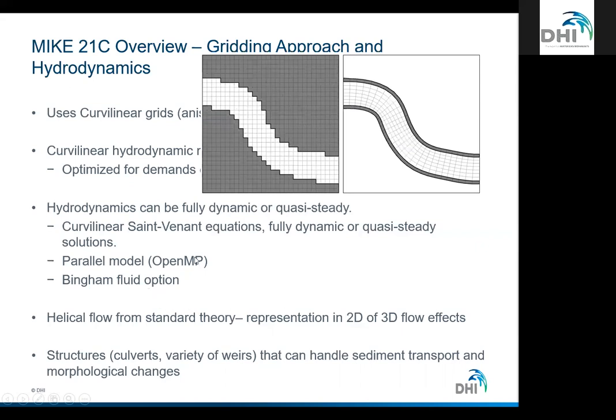In hydrodynamics, the flow can either be fully dynamic and unsteady — having a full flood hydrograph — or quasi-steady, or scaled for long-term simulations with some constant boundary conditions. We solve the full set of the Saint-Venant equations for 2D depth-integrated flow. The model is fully parallel. In MIKE 21C, as well as other 2D models DHI produces, we have a Bingham fluid option, which presents a simplified approach for doing non-Newtonian flow. There's obviously a large domain of non-Newtonian fluids that aren't exactly Bingham fluids, but it's a first-order approach.